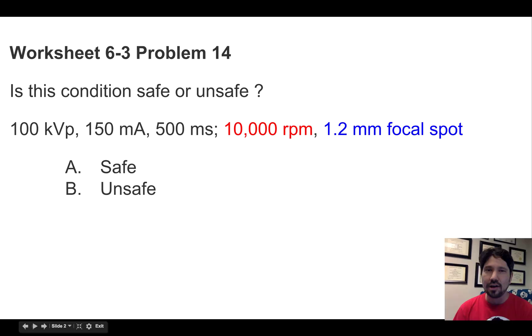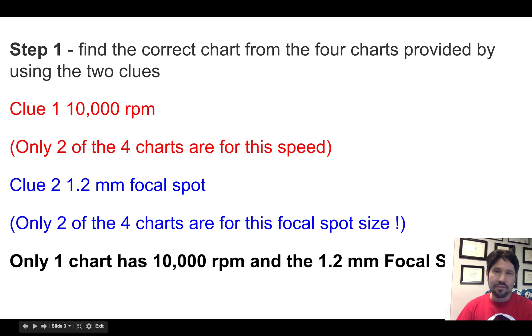Alright, so you'll get problems like this. Is this condition safe or unsafe? And they're going to give you a revolution speed, how fast the anode's spinning, and they're also going to give you a focal spot size, as well as a kVp, a time, and a current.